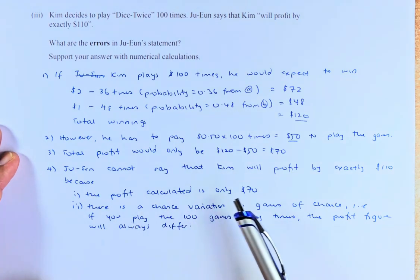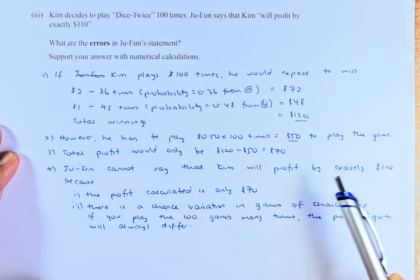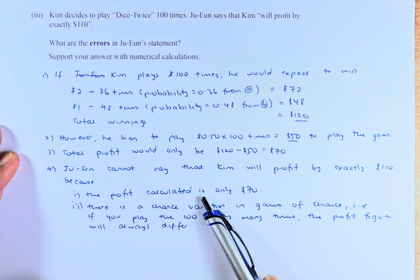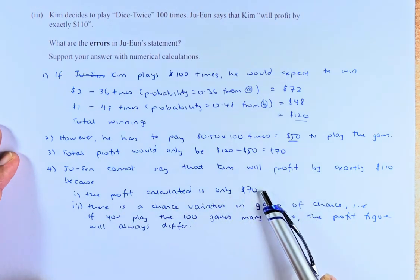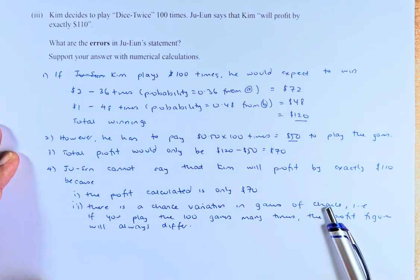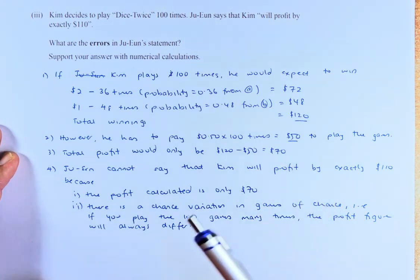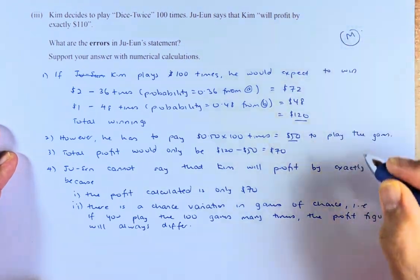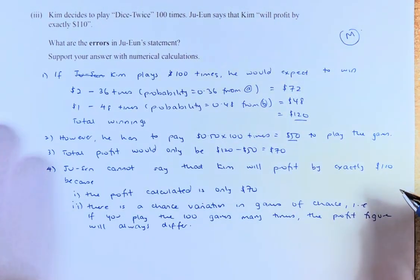Also, another point to note: Joo Eun cannot say that Kim will profit by exactly $110 because the profit calculated is only $70 instead of $110. And there is a chance variation in playing a game of chance. That is, if you play the game 100 times many times, the profit figure will always differ from one 100 games to another 100 games. So, that is why we talk about chance variation. If you can answer that, there is a merit for this paper and we will do question 3B in the next video.